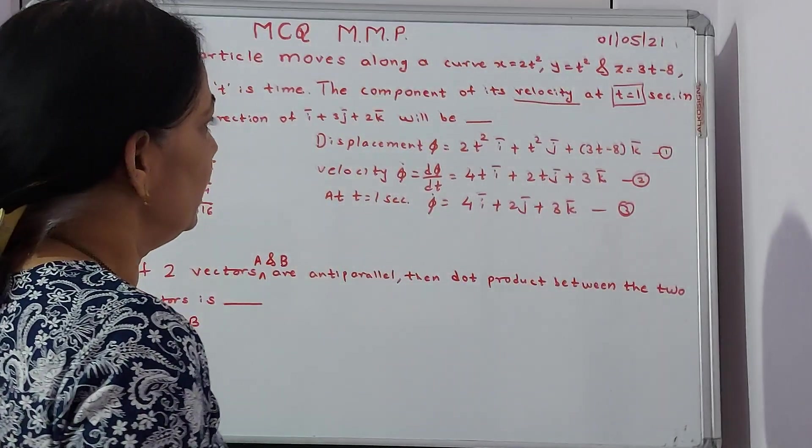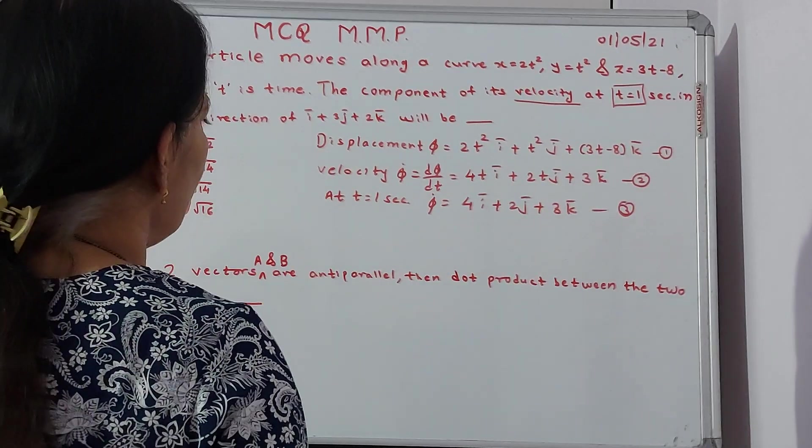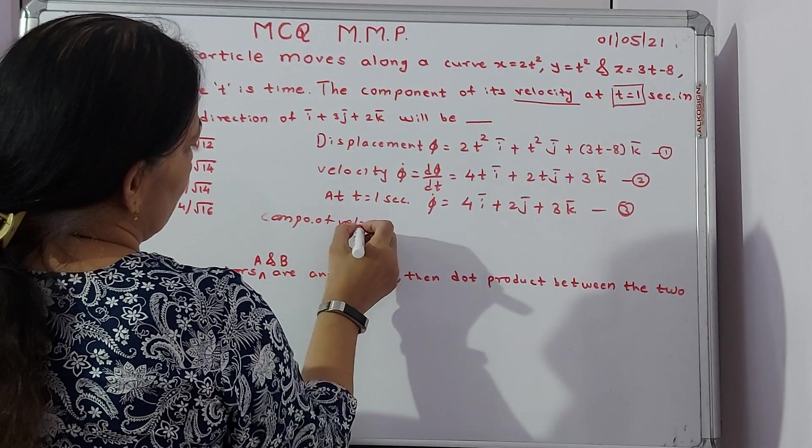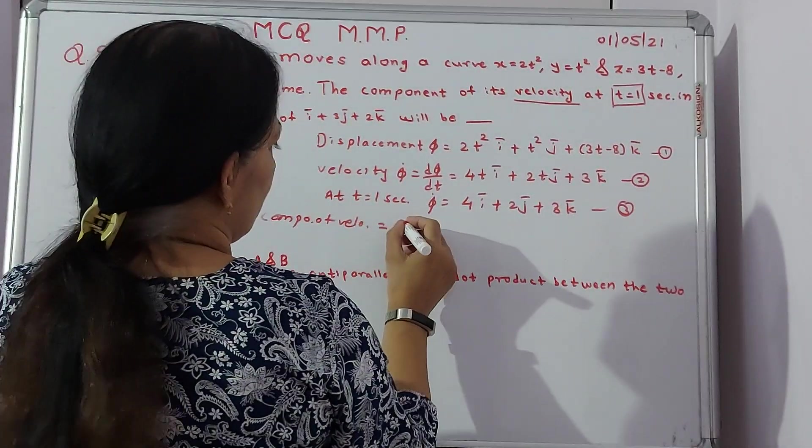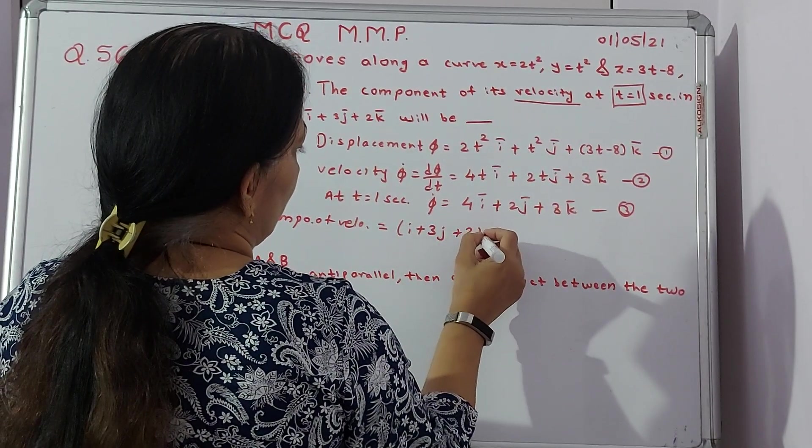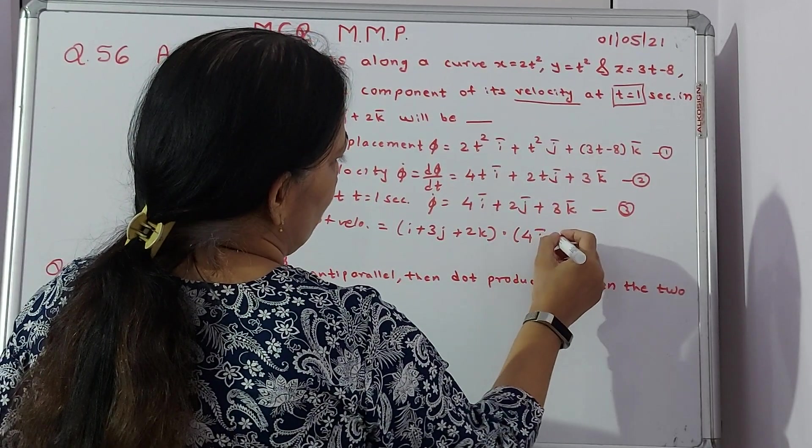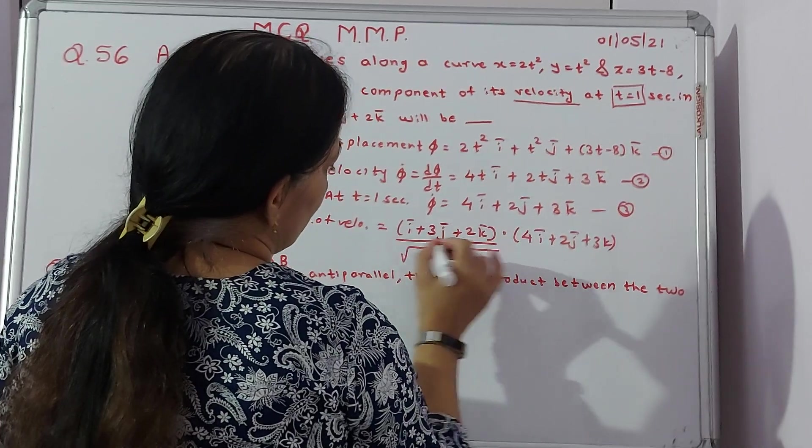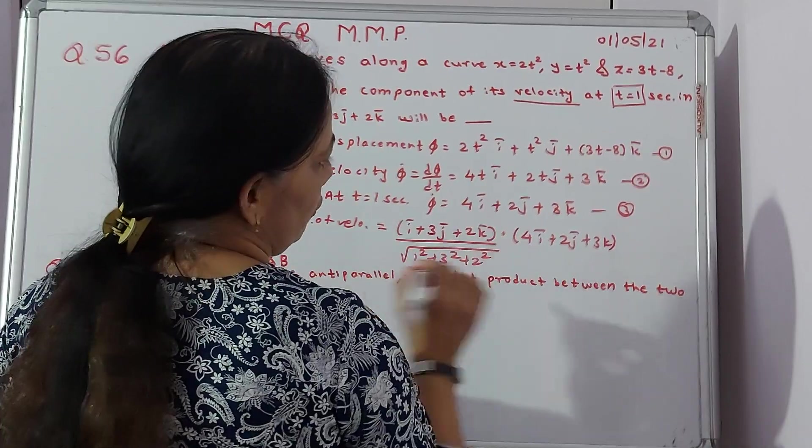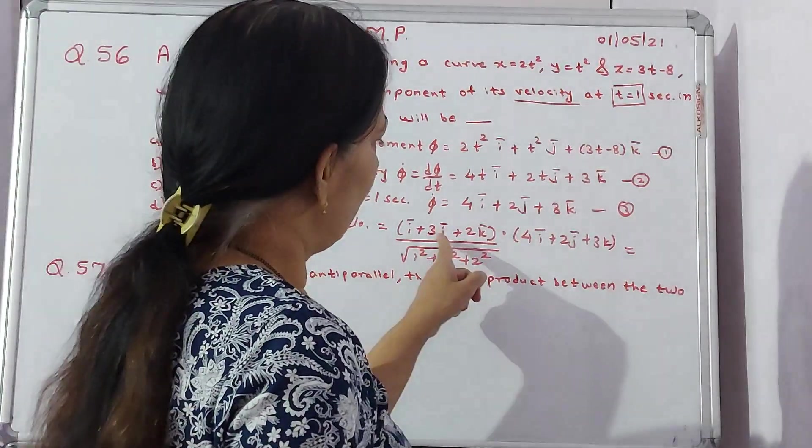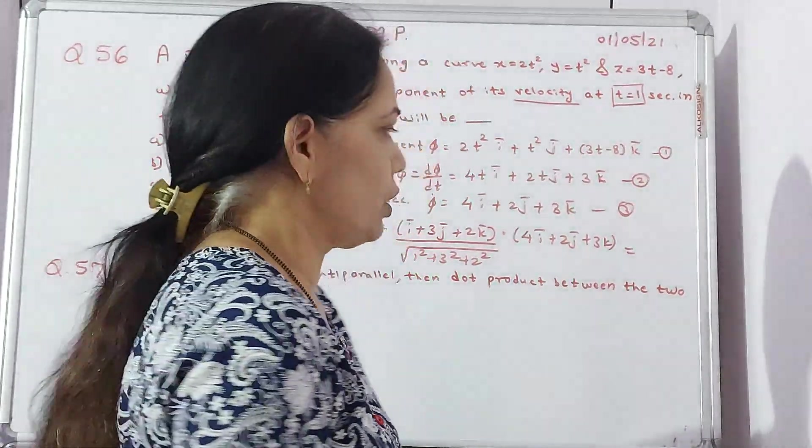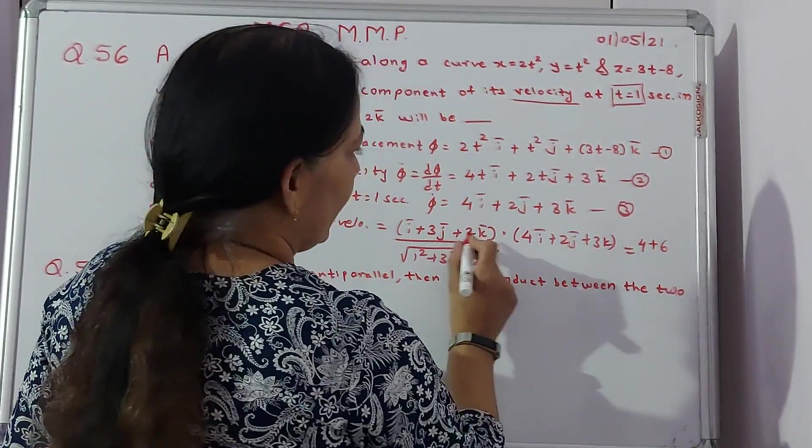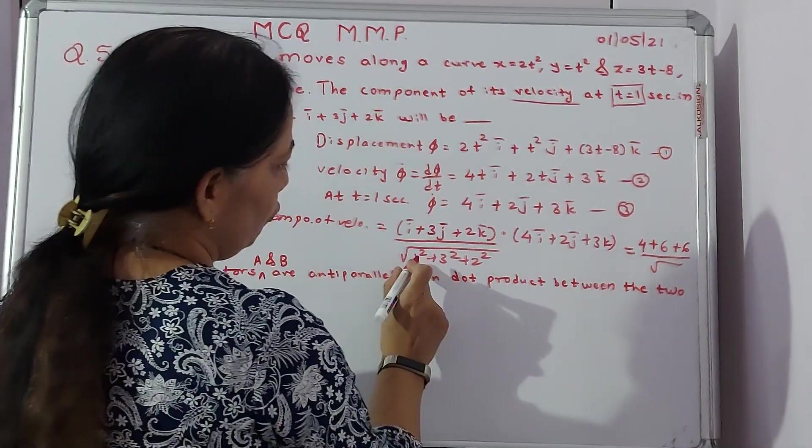Then my job is to get the component of velocity in the direction. To get that, the component of velocity will be given by that direction which is i plus 3j plus 2k dot phi dot which is 4i plus 2j plus 3k divided by its magnitude which is 1 square plus 3 square plus 2 square. We have to do i dot i, j dot j and k dot k terms only will exist. So we can say 1 dot 4 will be 4 plus 3 dot 2 will be 6 and 2 dot 3 will be also 6 divided by under root 1 plus 9 plus 4.